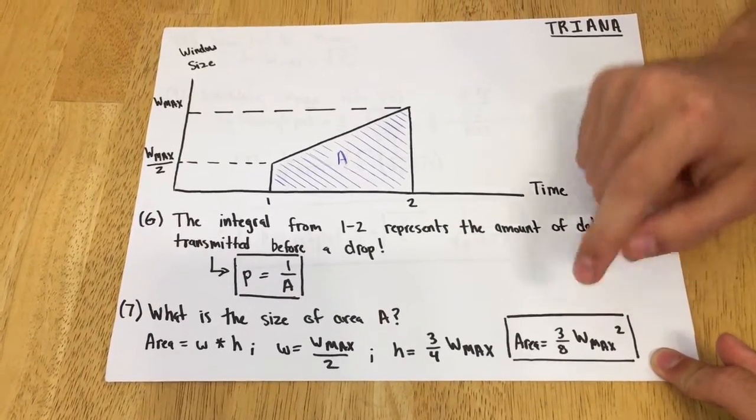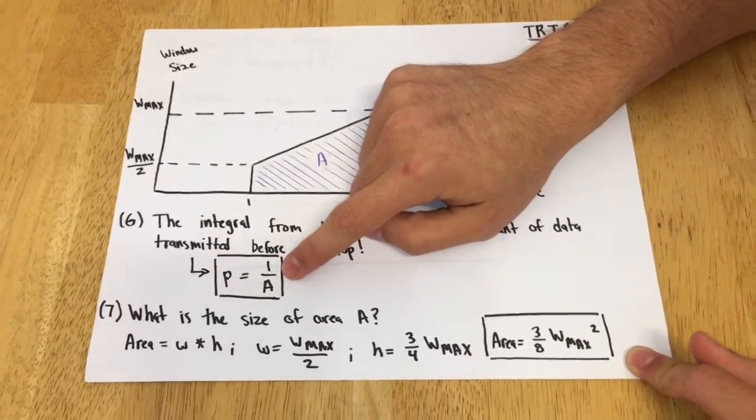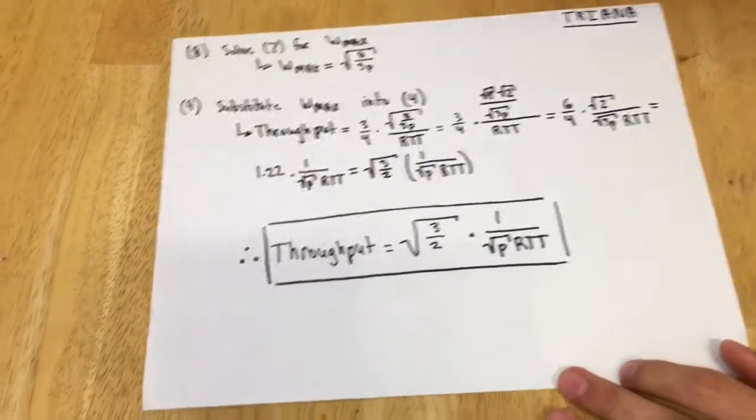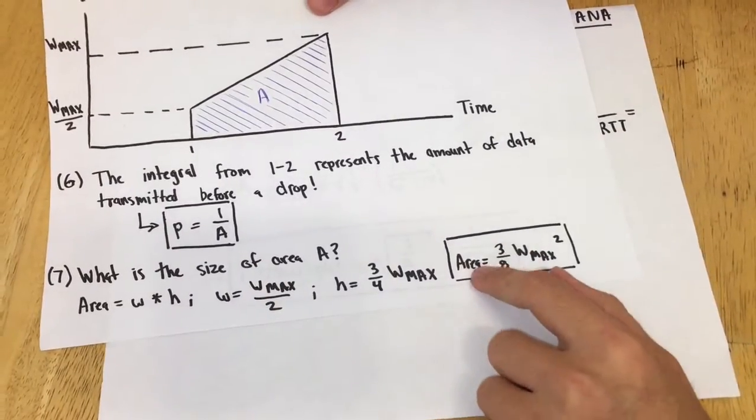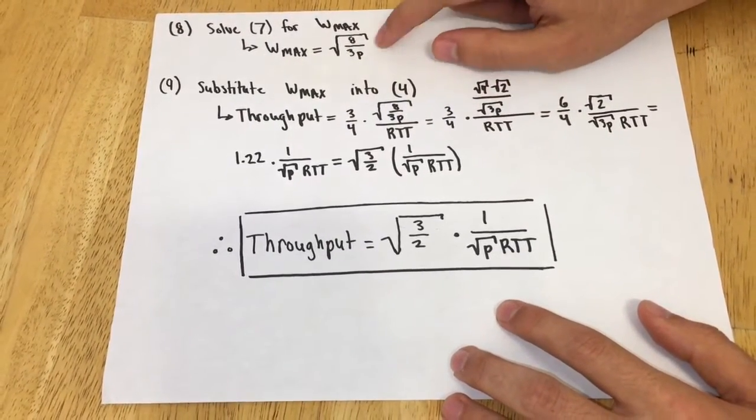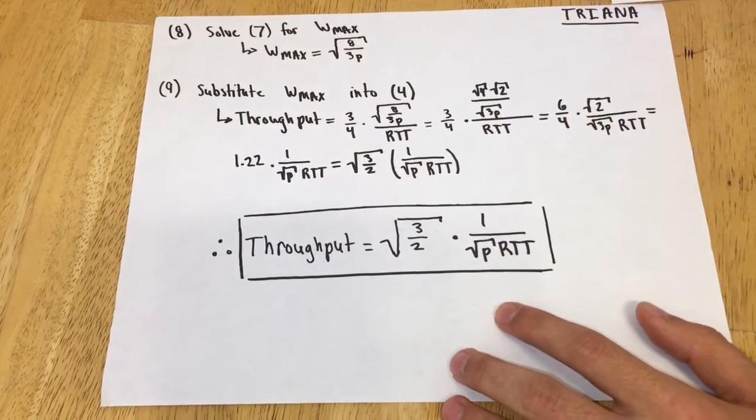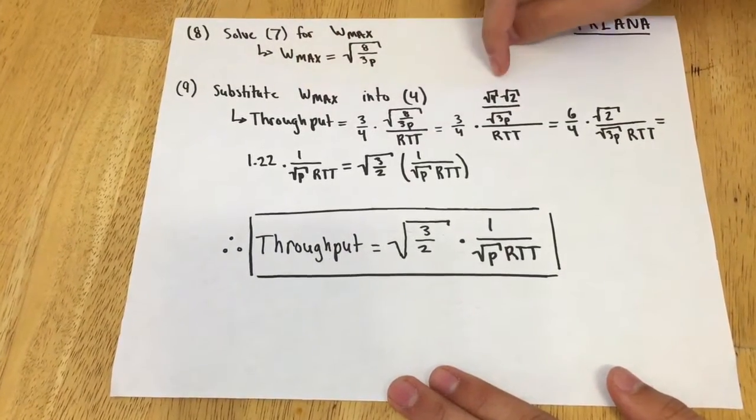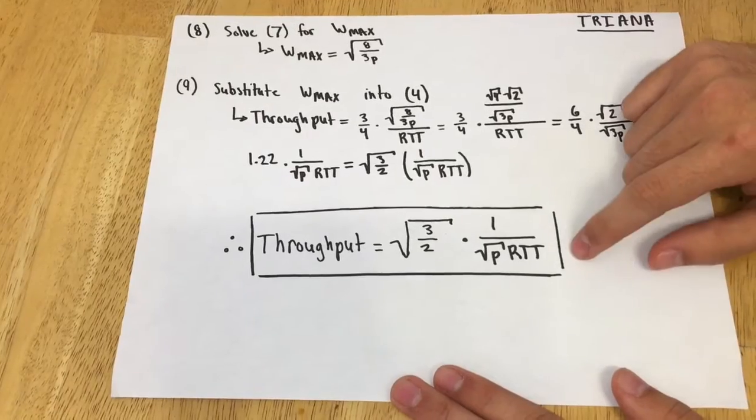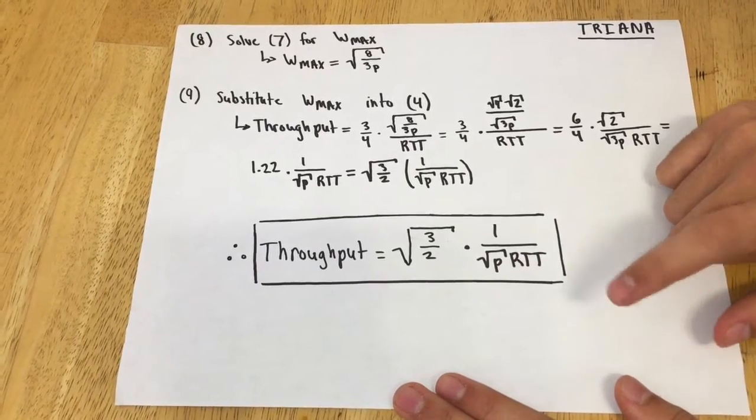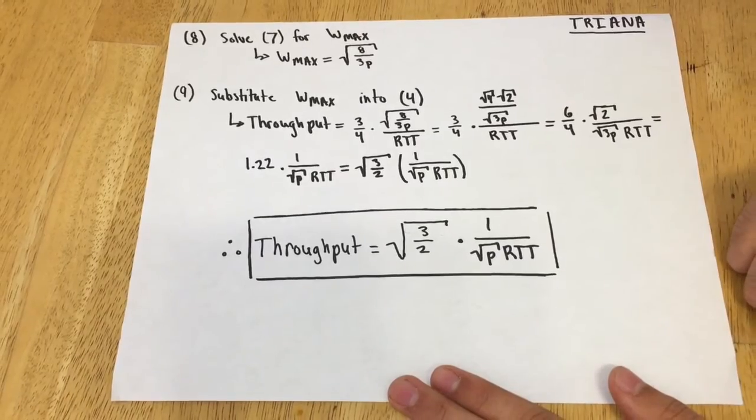We're almost there. If we take this expression and substitute it into the equation relating probability to area, we can calculate and solve for W_max, then plug that back into our original throughput equation. Solving for W_max, we get W_max equals the square root of 8 over 3P. Finally, if we substitute this into equation 4, which was the throughput, through some tedious mathematics we get the throughput equation: throughput using congestion control is roughly the square root of 3/2 times 1 over square root of P times RTT. All right guys, that's basically it.